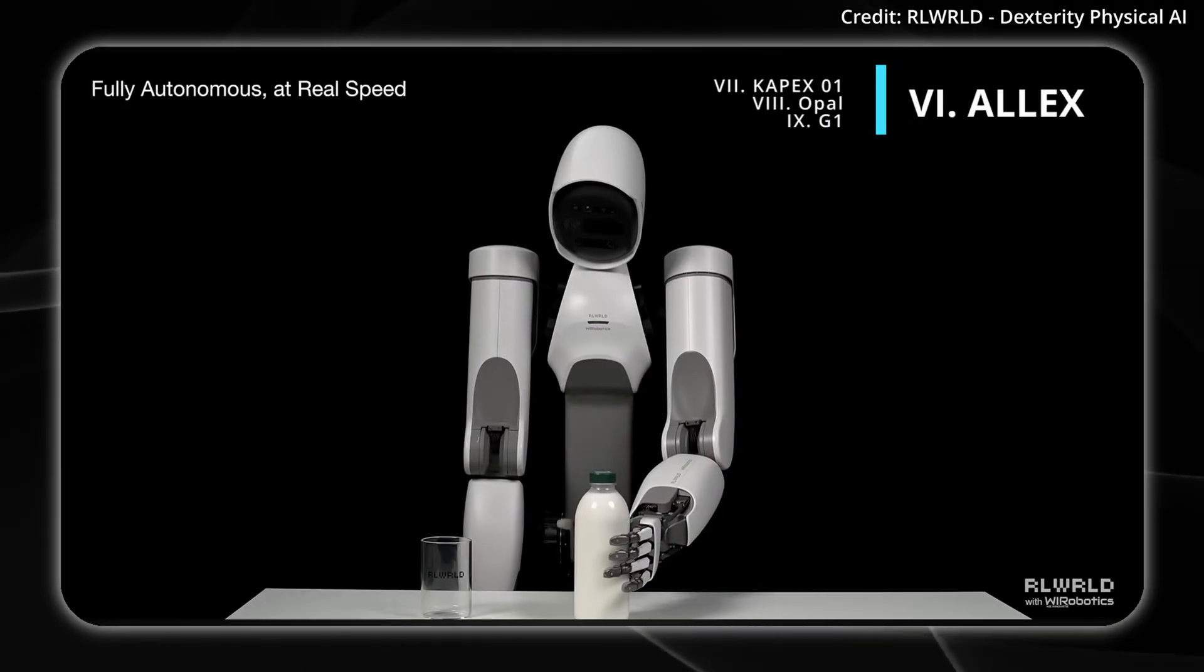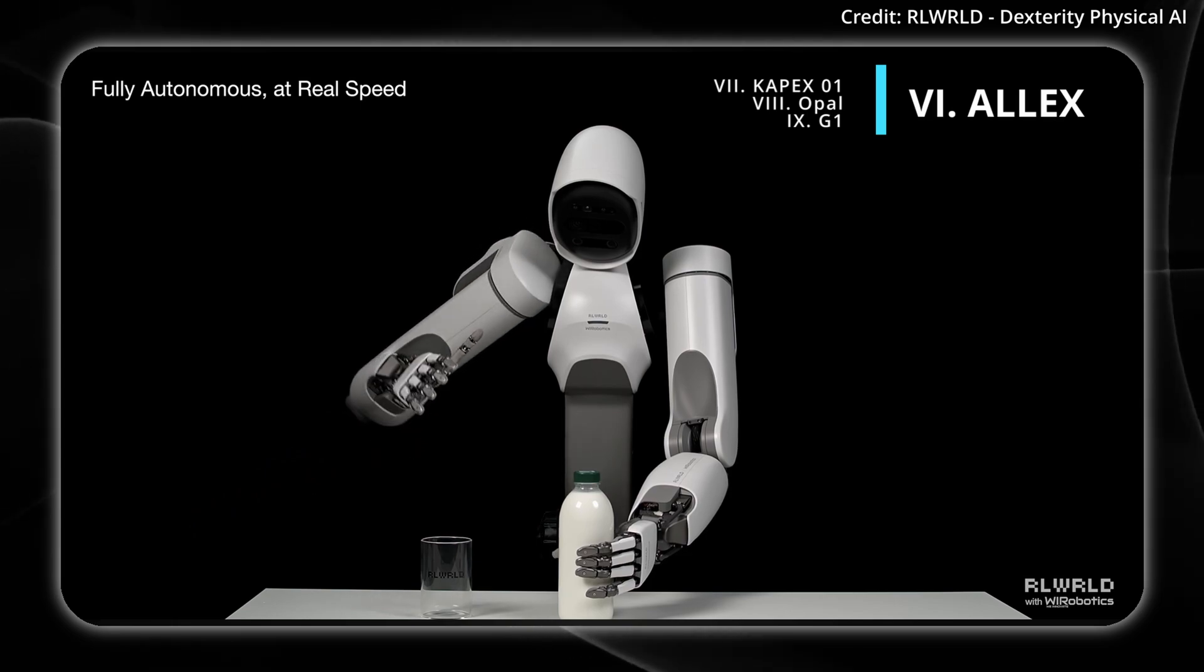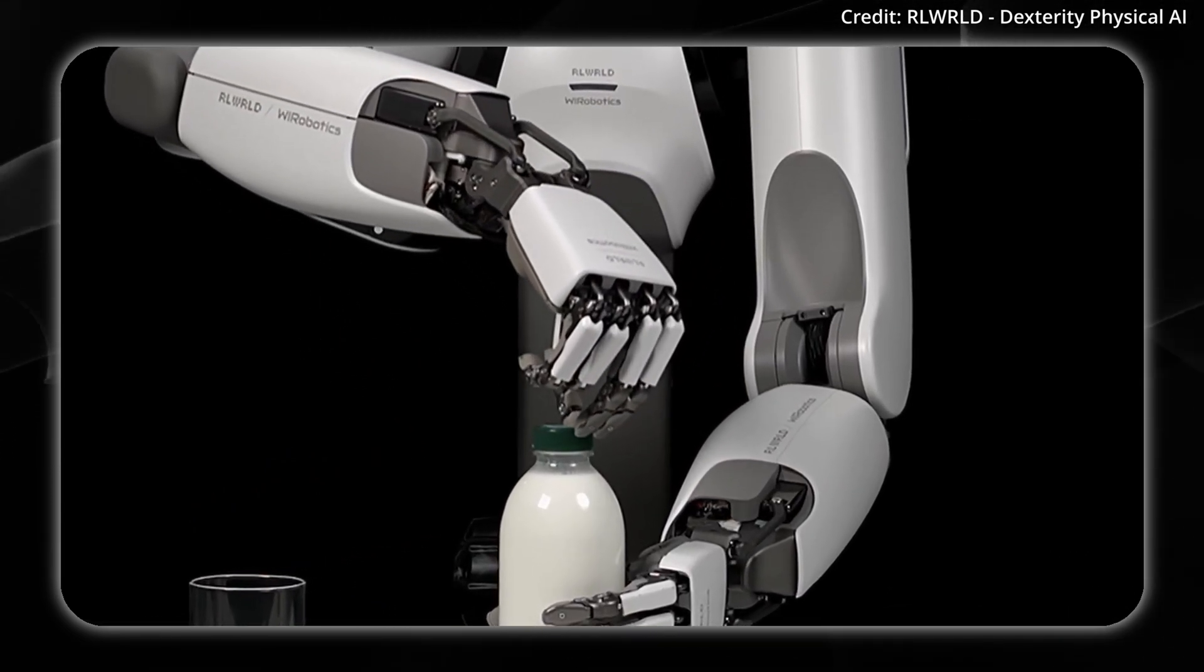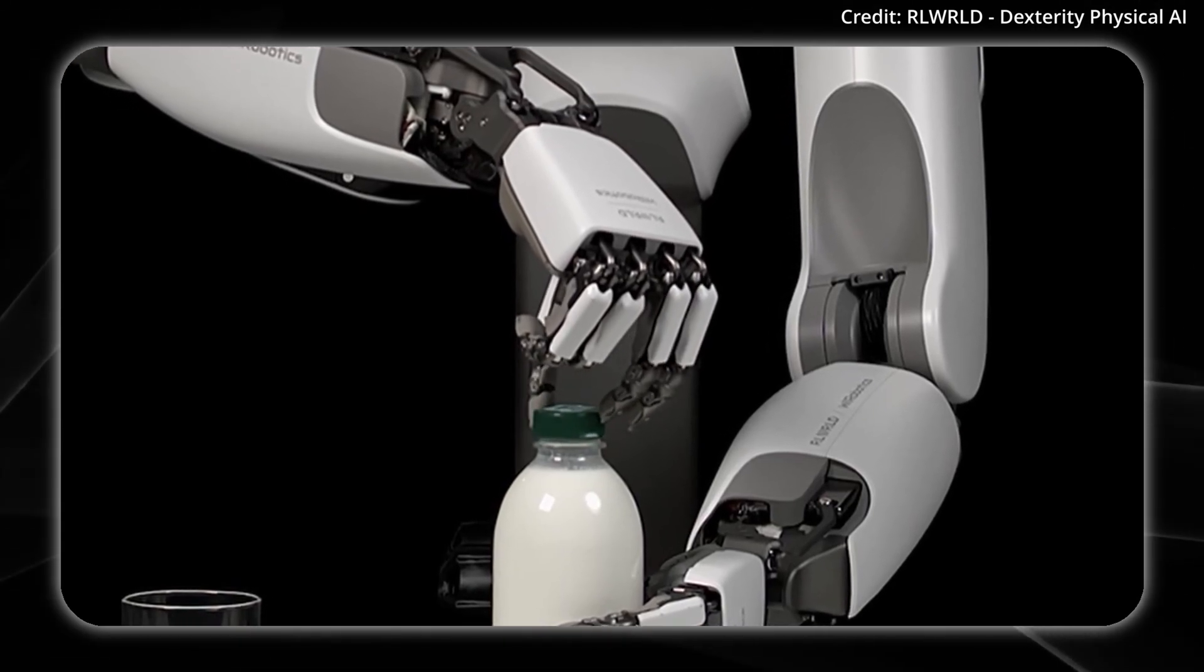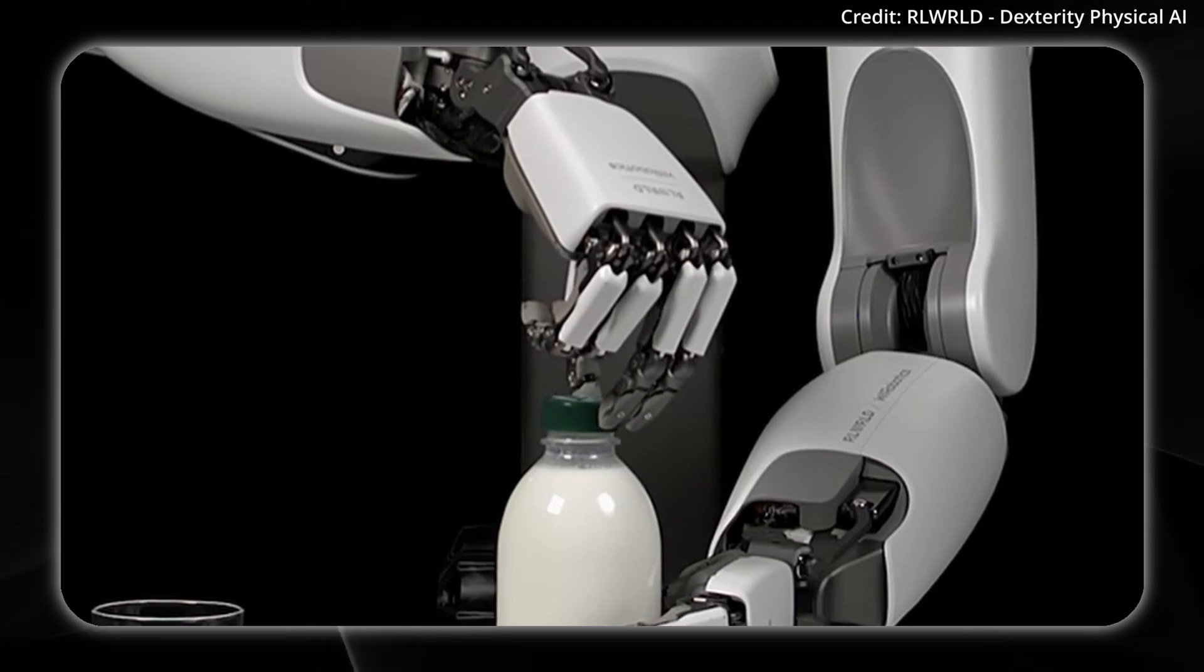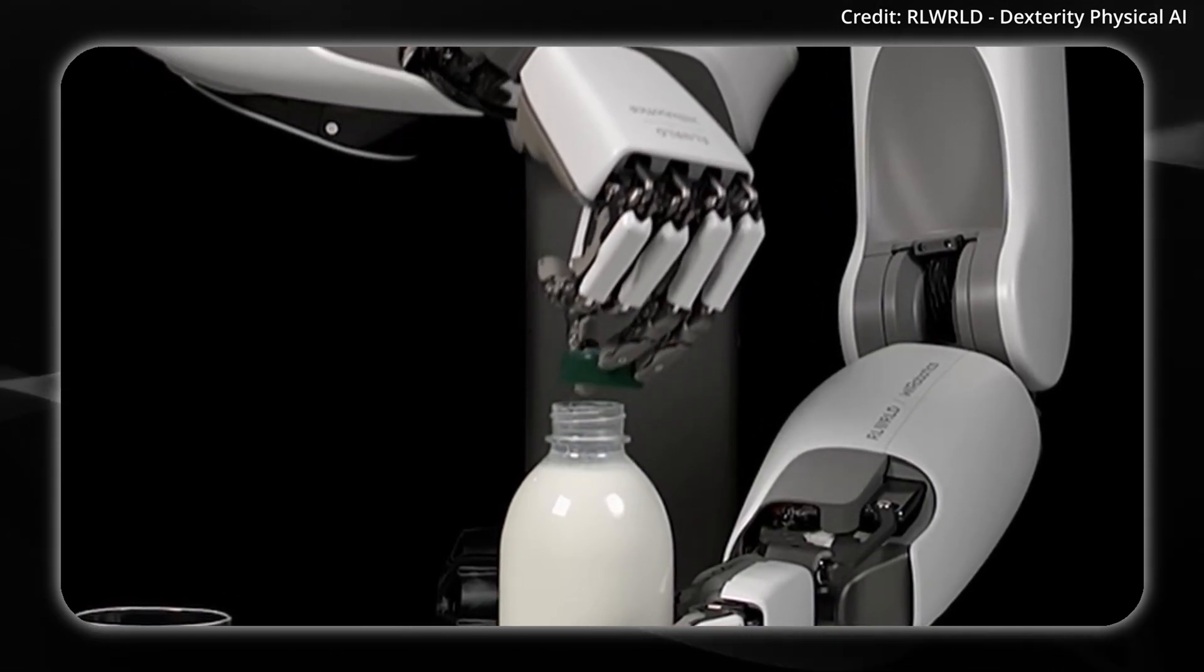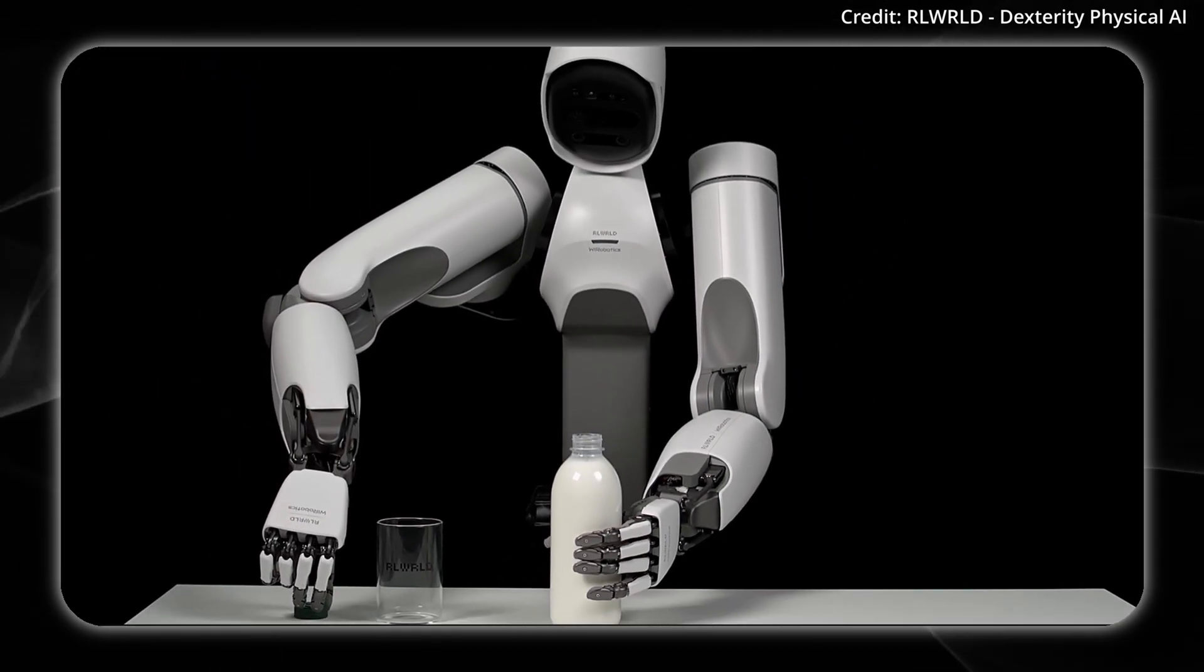But there's another brand new robot hand from South Korean company We Robotics in collaboration with RealWorld, as they just demoed their Alex robot autonomously opening a bottle and pouring milk, which is a deceptively complex task for robots. And their partner RealWorld is currently developing foundation models that give robots human-like vision, reasoning, and hand dexterity, with a focus on delicate manipulation and dynamic adaptation for real-world autonomy at scale.